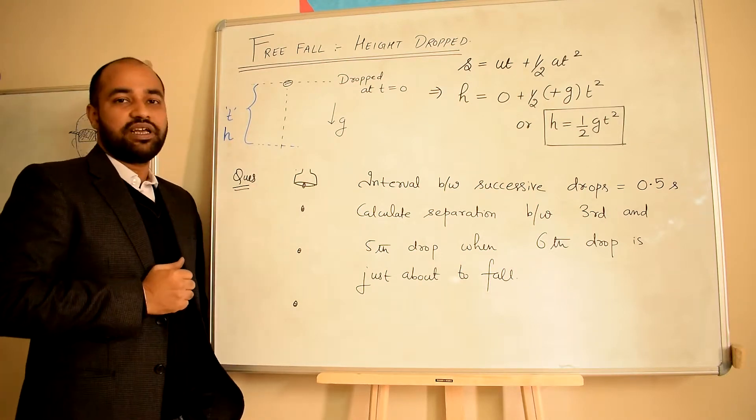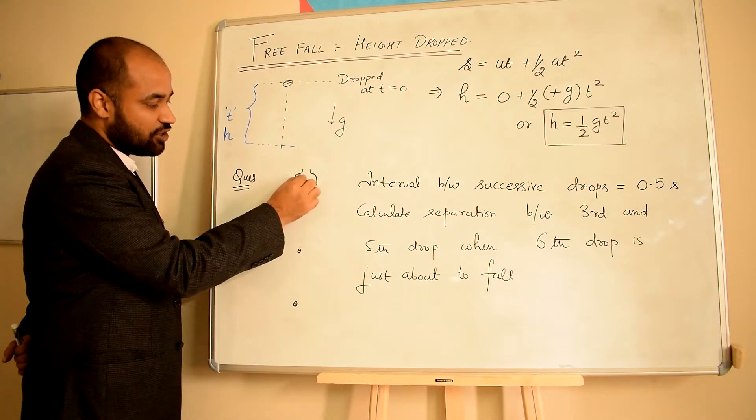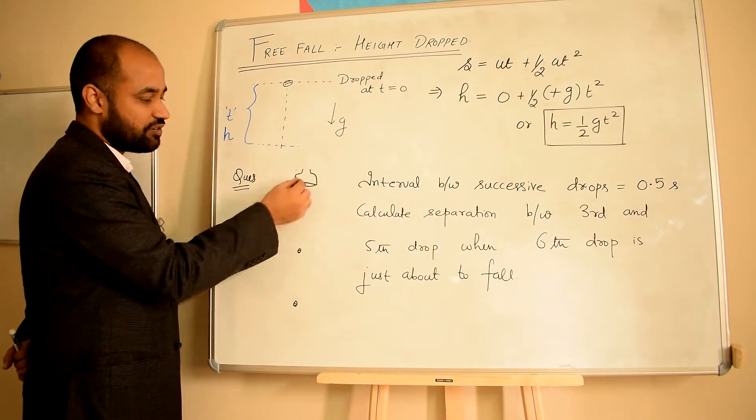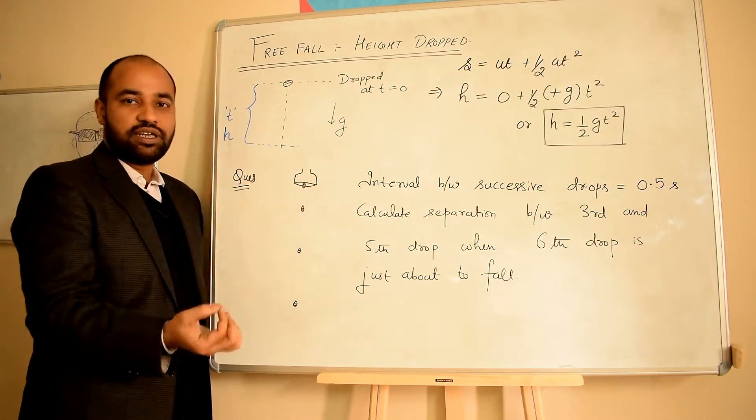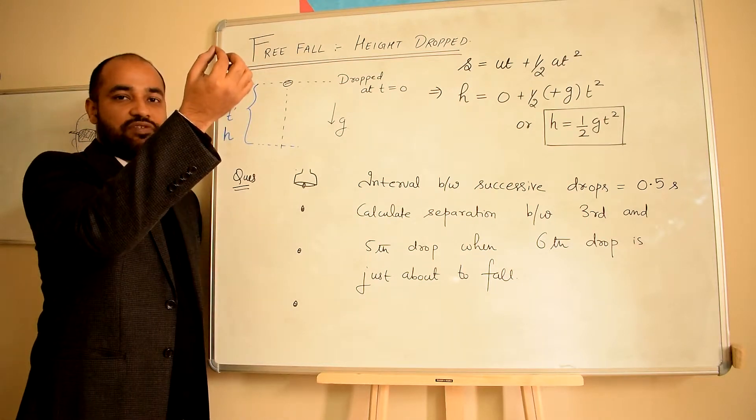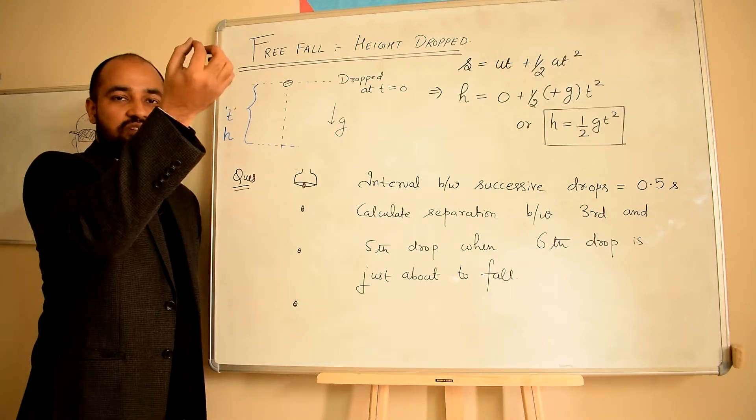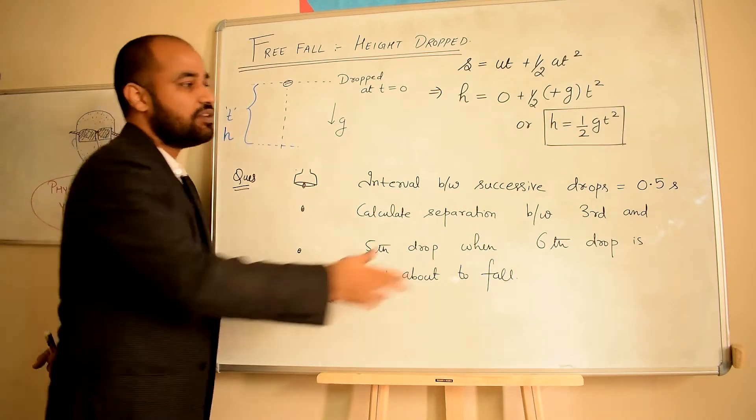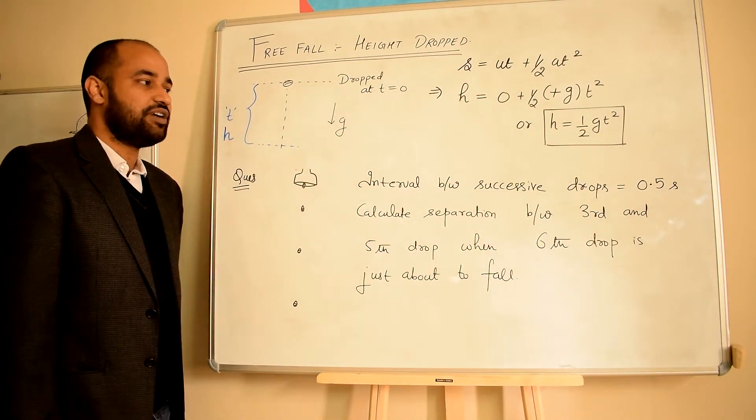Let's see an example on this. You have a tap which drops water drops that fall at a regular interval. So one drop falls, then 0.5 seconds later another drops, and so on. The interval between successive drops is 0.5 seconds.